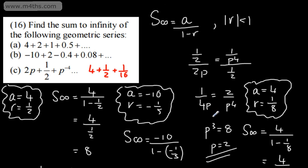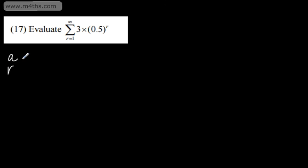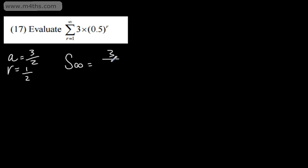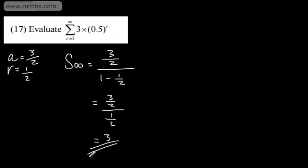After that build-up, the calculations are somewhat underwhelming. Question 17 asks to evaluate the sum from r equals 1 to infinity of 3 times 0.5 to the power of r. When r is 1, that's 3 times one-half, which is 1.5 or 3 over 2. The common ratio is also one-half. So the sum to infinity equals 3 over 2, divided by 1 minus one-half, which is 3 over 2 over 1 over 2, giving 3. That is the sum to infinity.